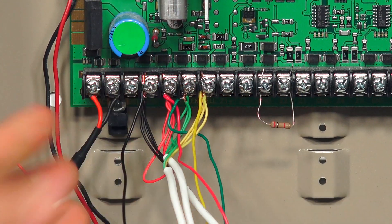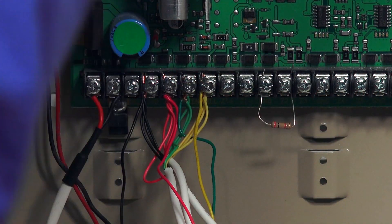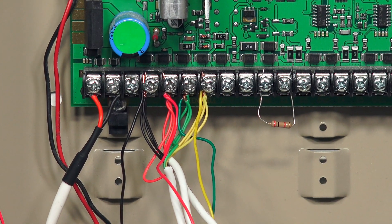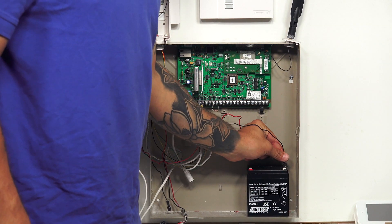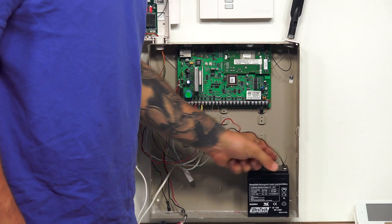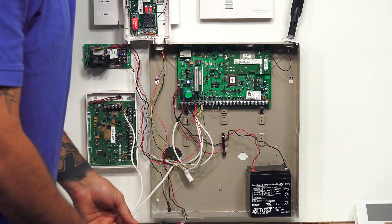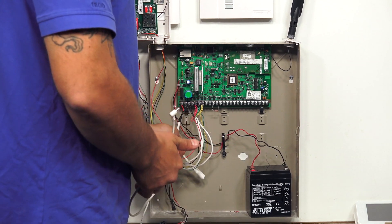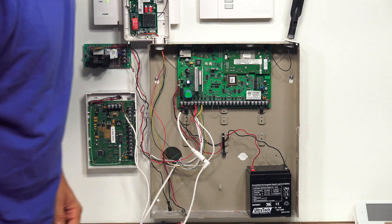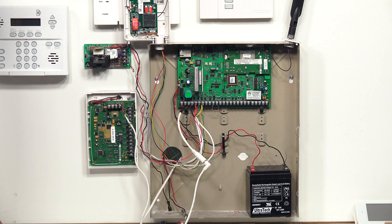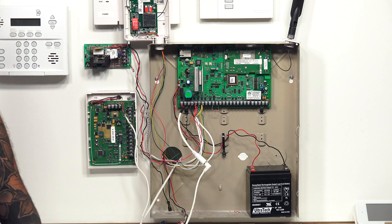All right, so now our connections are all made up and ready to power the system back up. The first thing I'm going to do is plug in the backup battery, and then plug in the system. And as you can see, our communicator has some activity lights powering up.